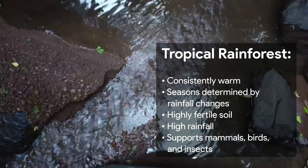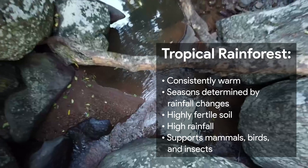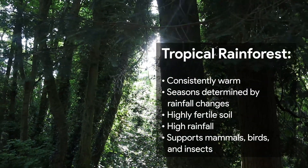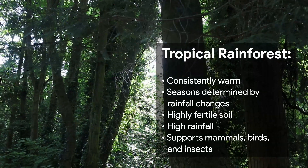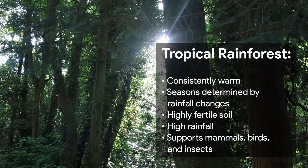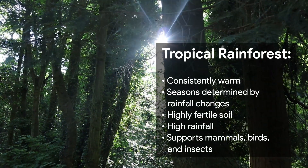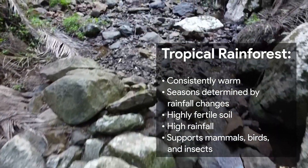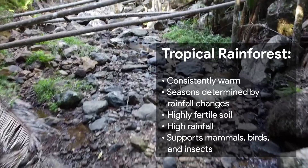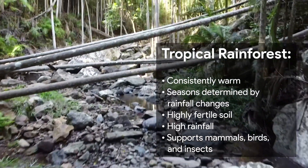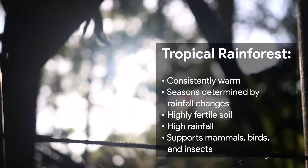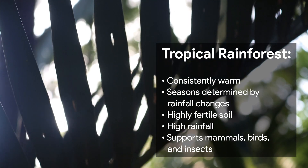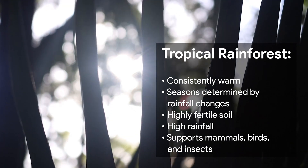Tropical rainforest habitats are the opposite to this. These rainforests are consistently warm and the seasons are determined by changes in rainfall rather than in temperature. With highly fertile soil and high rainfall, these areas are diverse in both animal and plant life. Animal species include primates, other mammals, birds and insects.